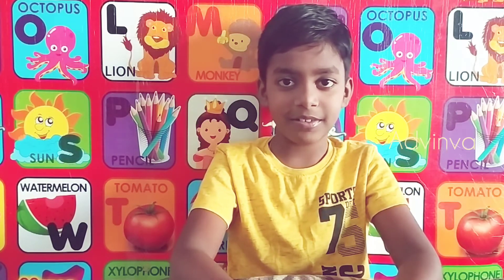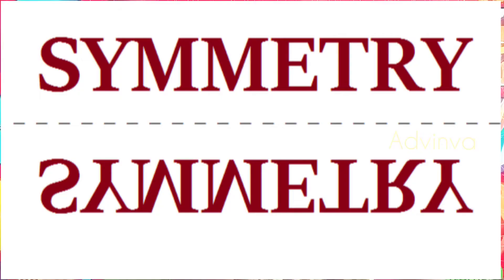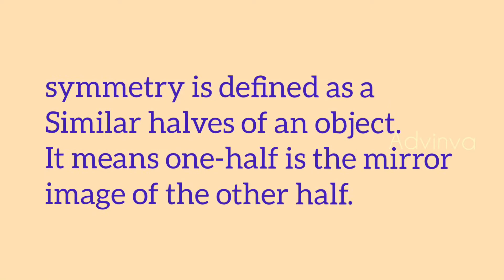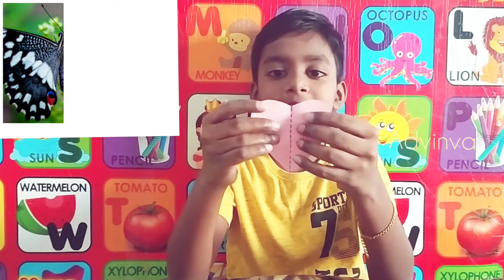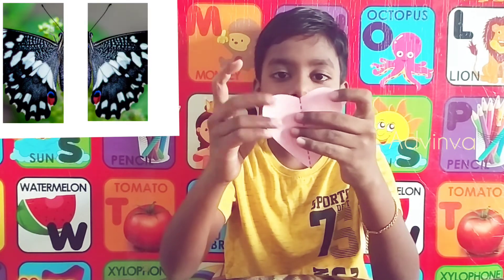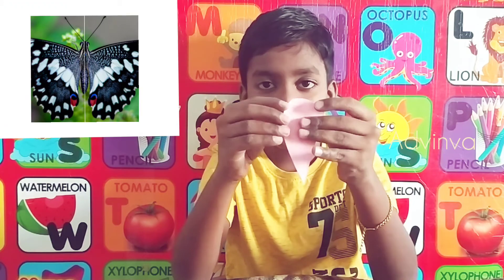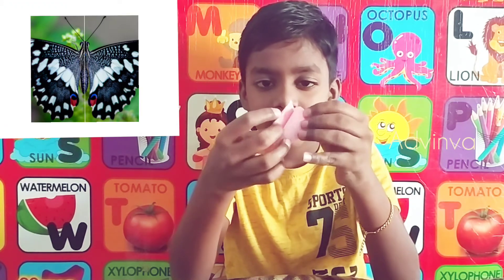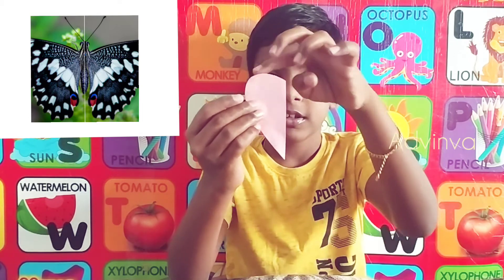Hi guys, this is me now. Today we're going to learn about symmetry. So what is symmetry? Symmetry is when we can cut a shape into the same parts. Like this heart here — I cut it, and look, it looks the same when you fold it.